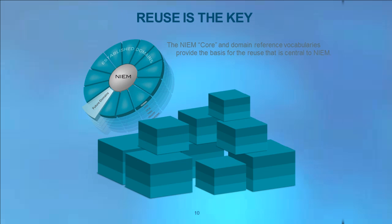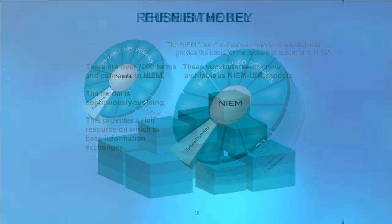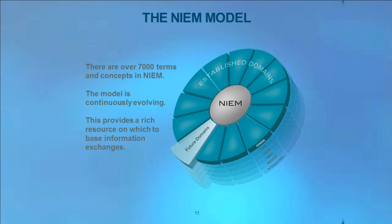Building on and reusing what others have done is a core value of NIEM. NIEM provides reusable reference vocabularies that span multiple domains, now available as NIEM UML models. There are over 7,000 terms and concepts in NIEM, and this model is continually evolving, providing a rich resource on which to base information exchanges. However, not all of these concepts are required for any one purpose.